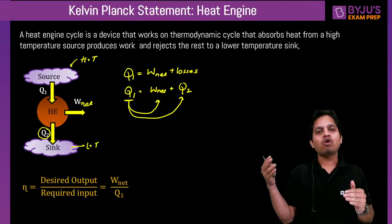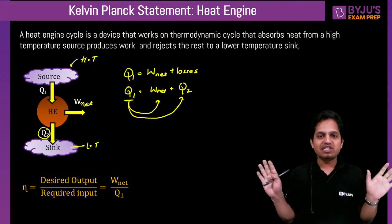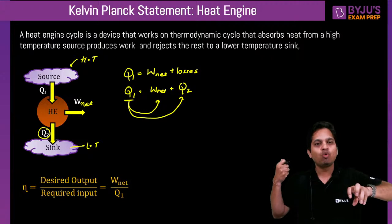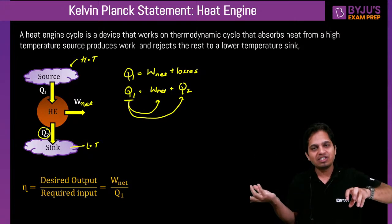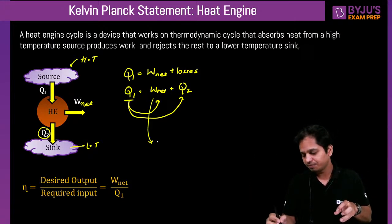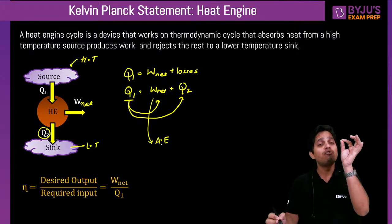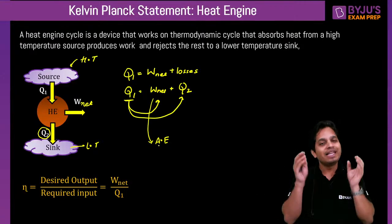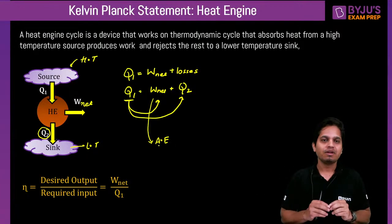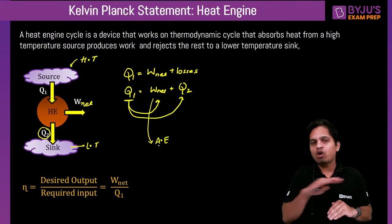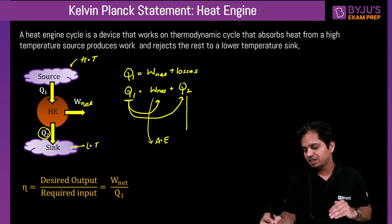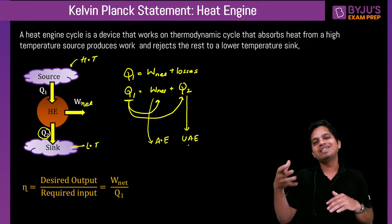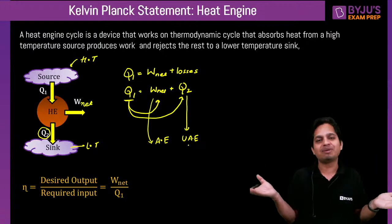When you see the concept of available energy and unavailable energy later, it is the same thing. I am giving heat Q1 — the amount of work you can obtain is the available energy. There will always be some losses; you can minimize them but cannot eliminate them completely. That portion is unavailable energy. This is not a new concept.